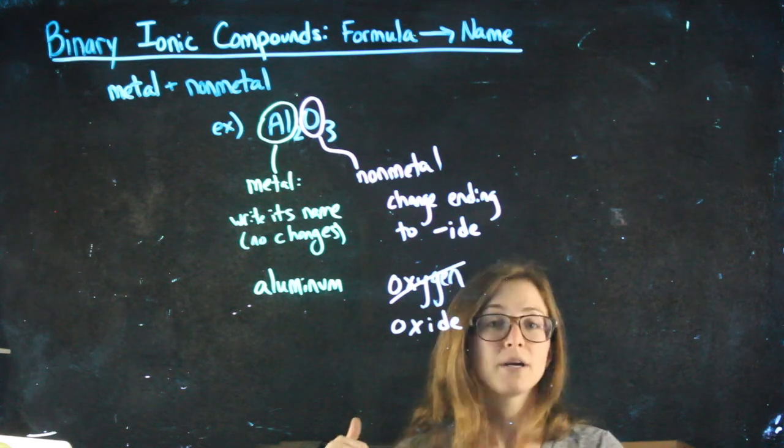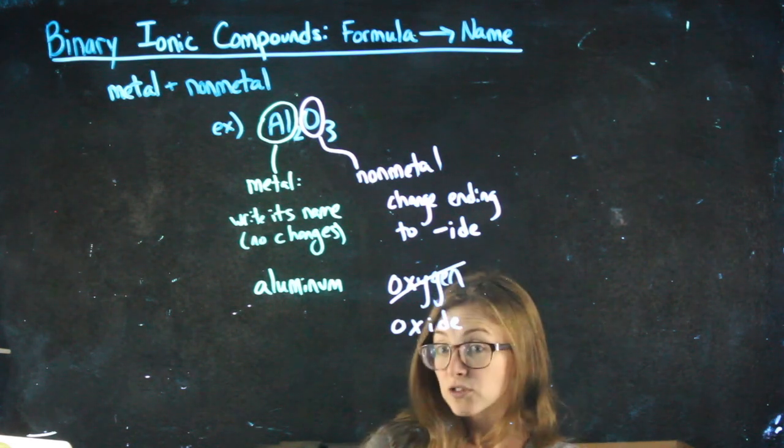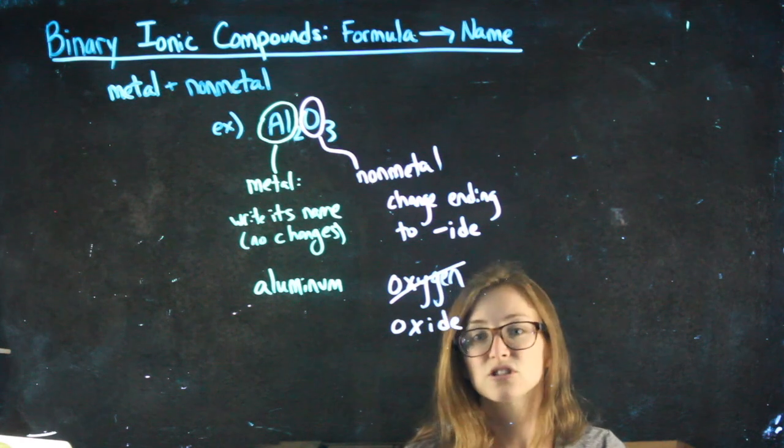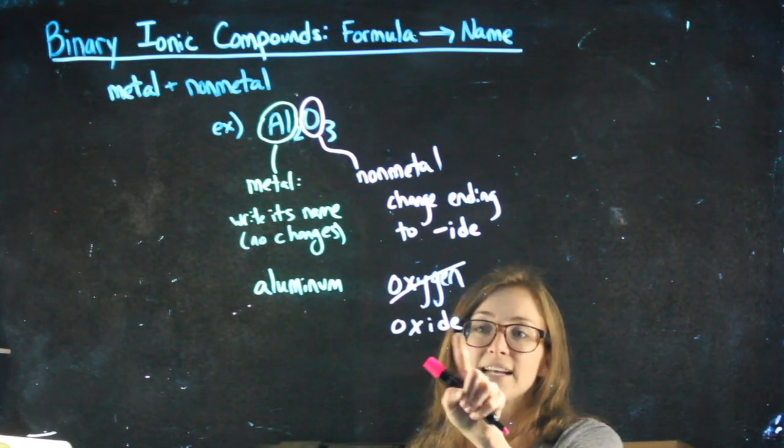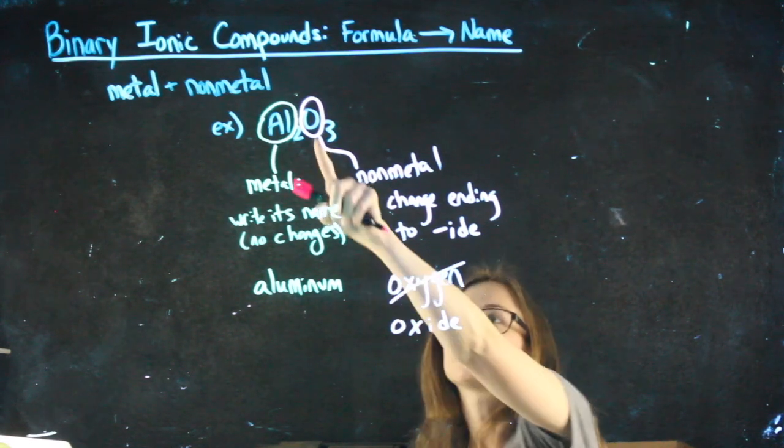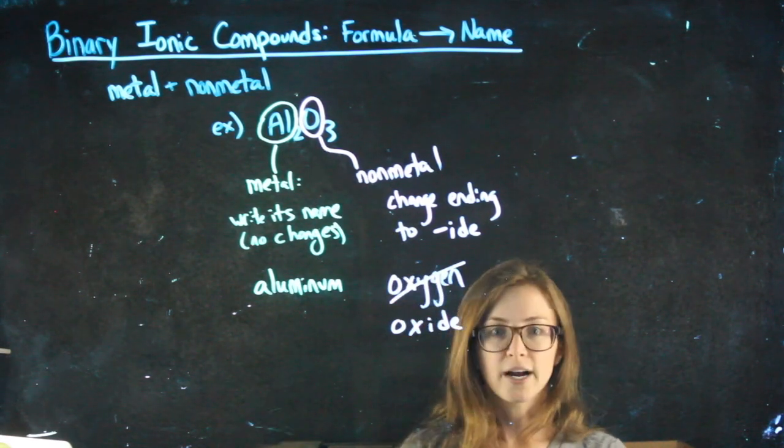Let's see. Chlorine would become chloride. Phosphorus, phosphide. Sulfur, sulfide. You'll kind of feel your way through it, but having the ending of IDE tells us that we're working with an ionic compound here.